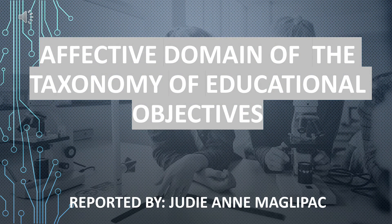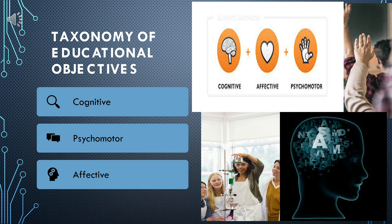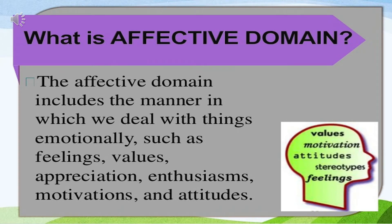Good evening ma'am, good evening classmates. Our topic for this evening is about the affective domain of the taxonomy of educational objectives. The taxonomy of educational objectives has three learning domains: the cognitive, which talks about our knowledge and thinking; the psychomotor, which talks about physical skills and what we can do; and lastly, the affective domain, which talks about our attitudes and feelings.